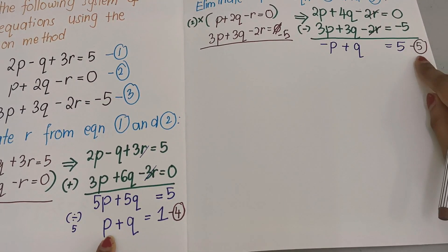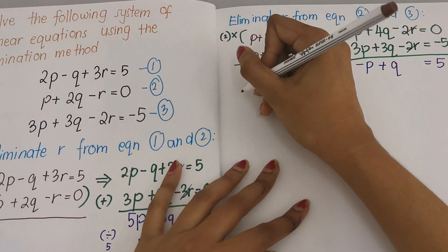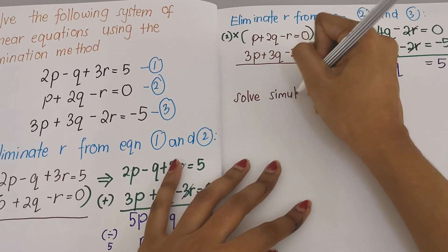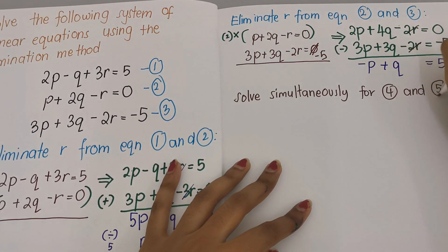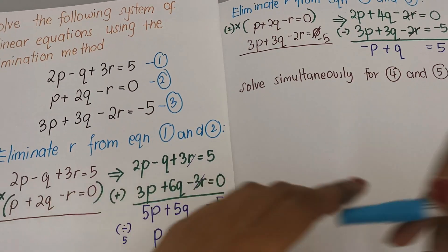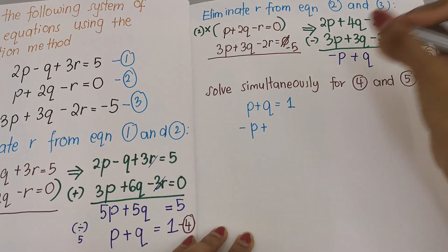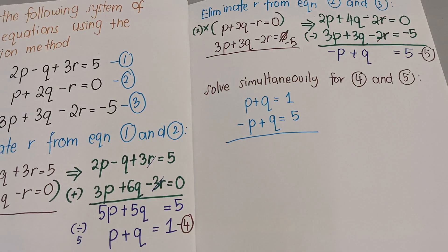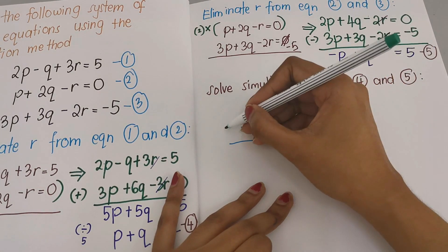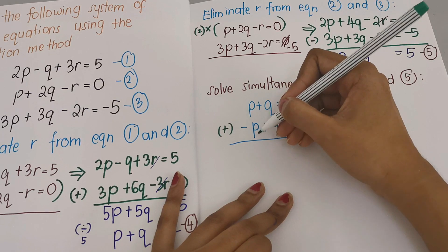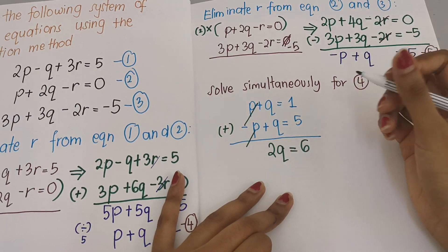Now we have two new equations — equation 4: p plus q equals 1, and equation 5: negative p plus q equals 5. We solve this simultaneous system. I'll eliminate p: since we have positive p and negative p, adding gives 2q equals 6, so q equals 3.